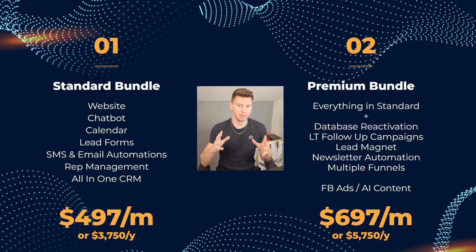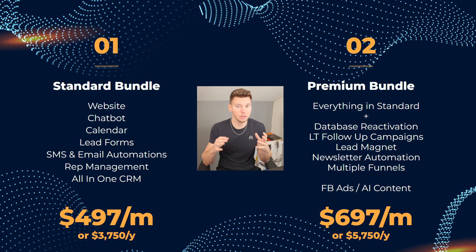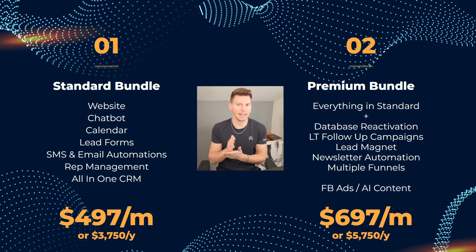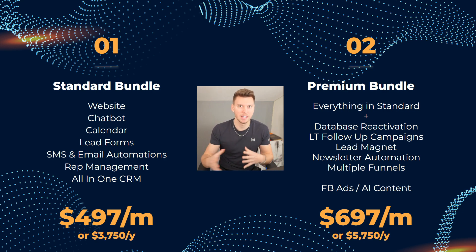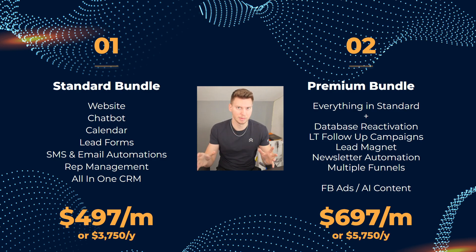The standard bundle's main things are automations, reputation management, and the all-in-one CRM. I believe those are the most powerful because everyone wants automatic systems — you can word it as an AI-type system. Everything else in this bundle is an add-on. I'm just going to focus on what they need, and if they bring up their website I'll mention the chatbot. I'm not going to list everything off at once — two to three things in a bundle at $497 a month is the move.